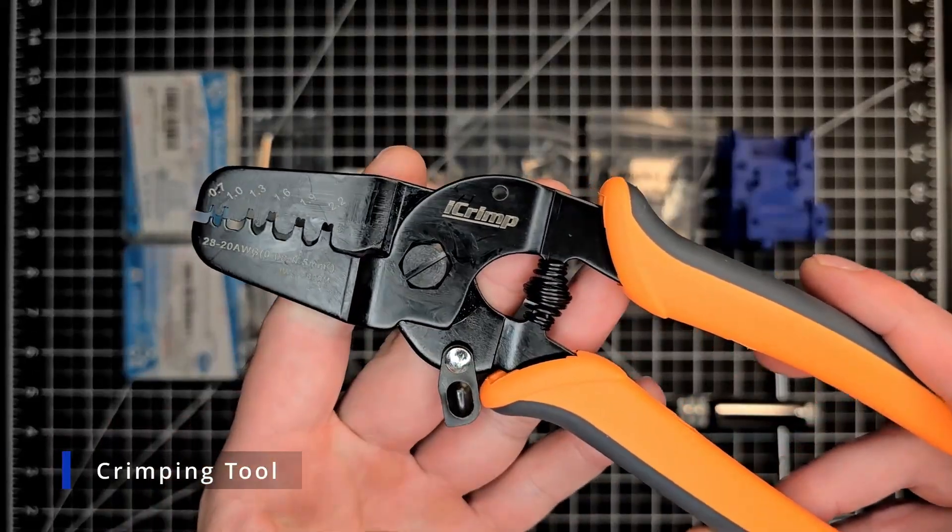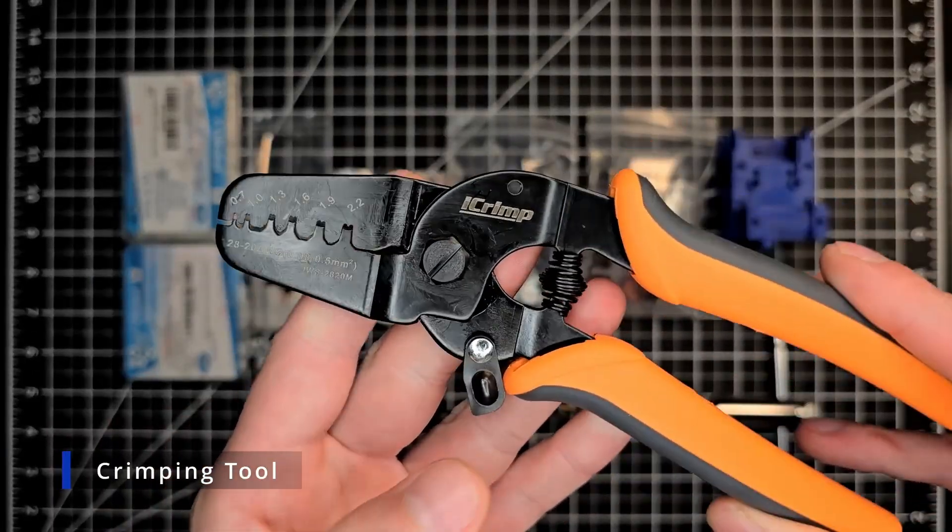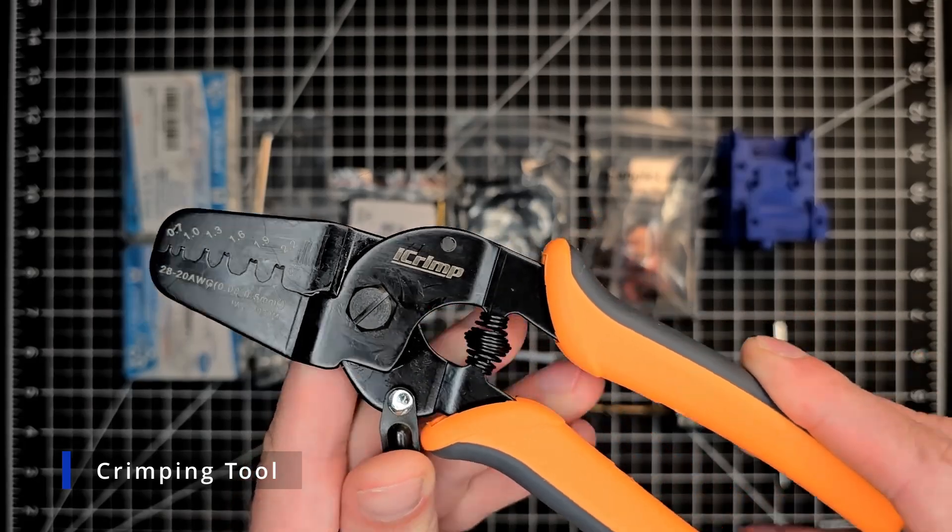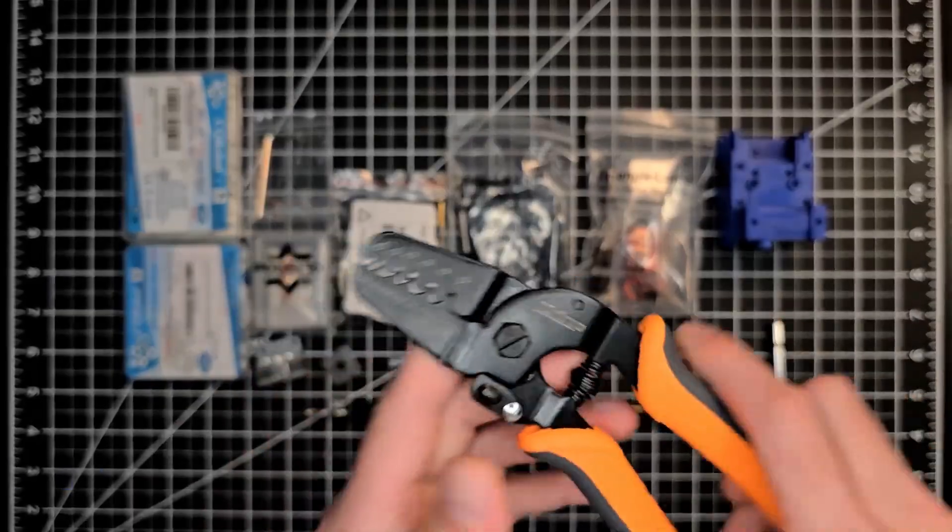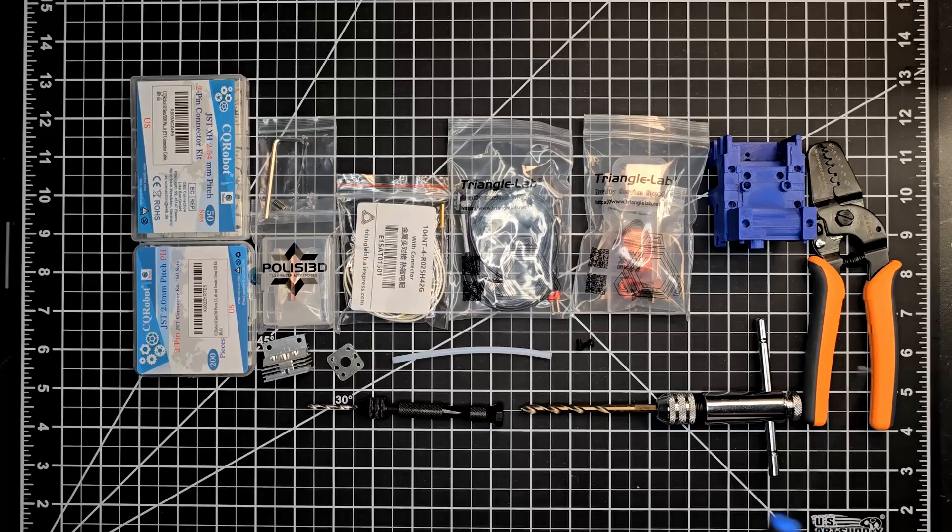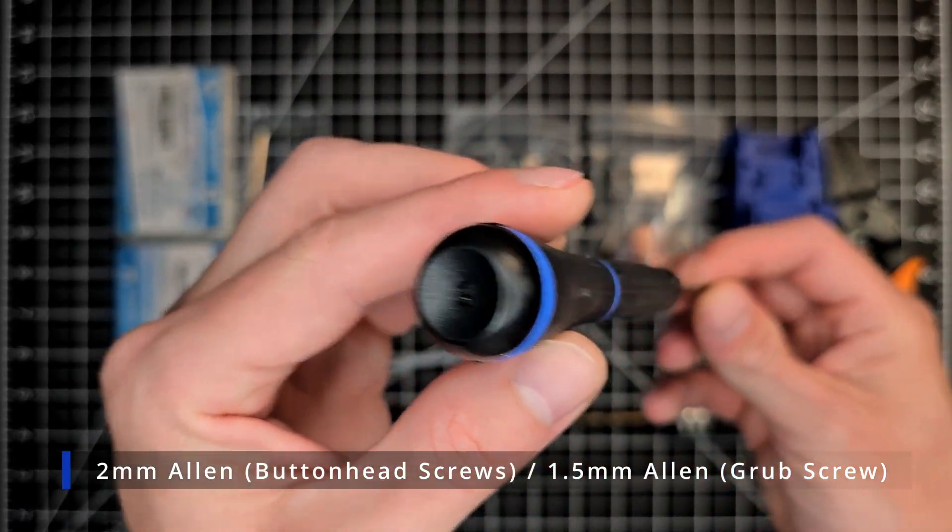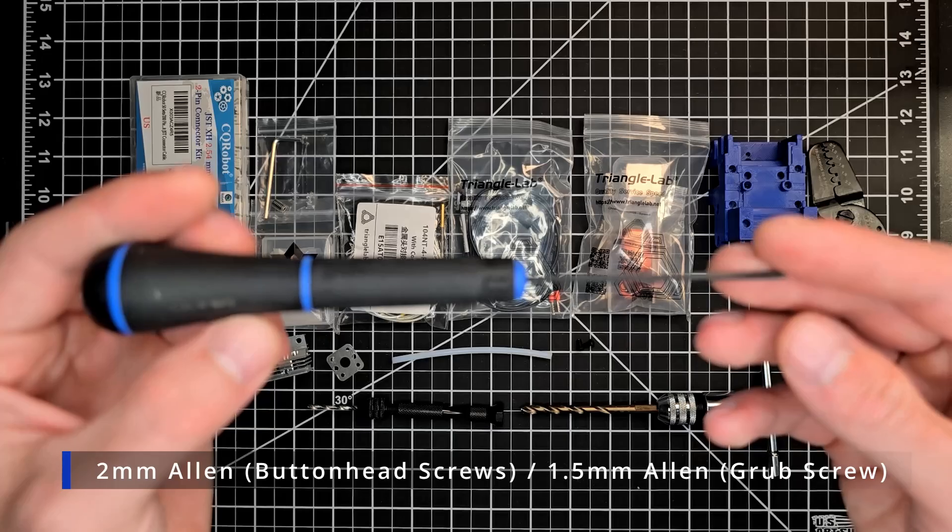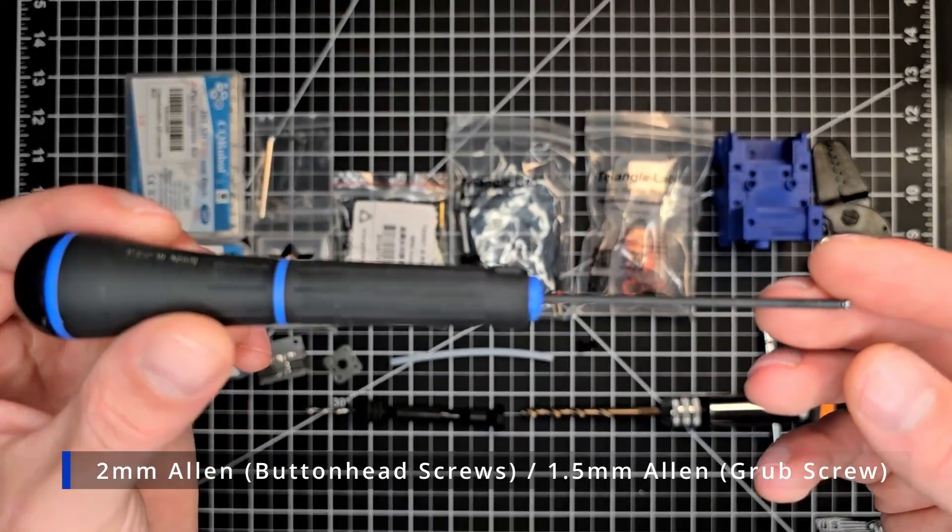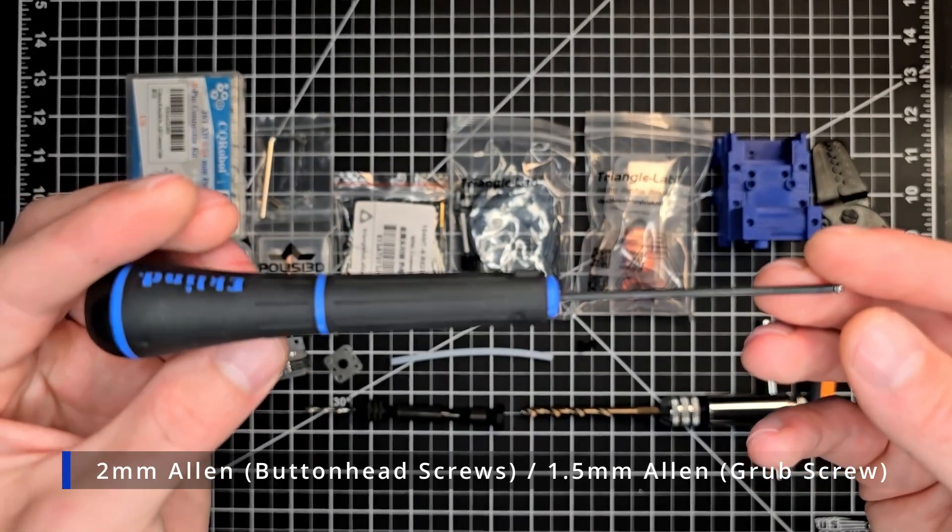A set of crimps as we will need to re-terminate the heater and thermistor wires with the JST connectors. A 2mm Allen which will be used for the button head screws going through the adapter plate and into the K1 heatsink, as well as a 1.5mm Allen for the heat brake grub screw.